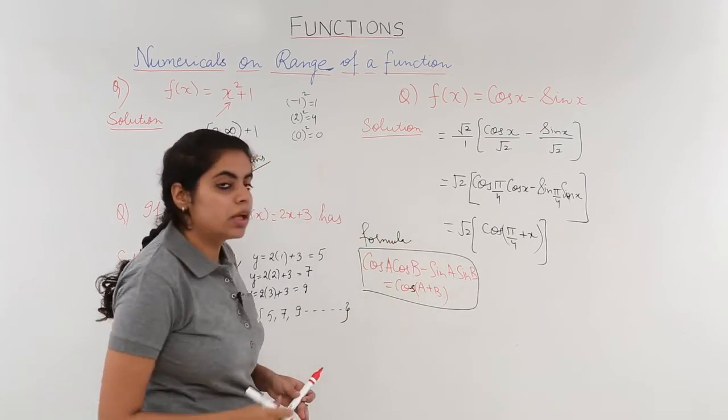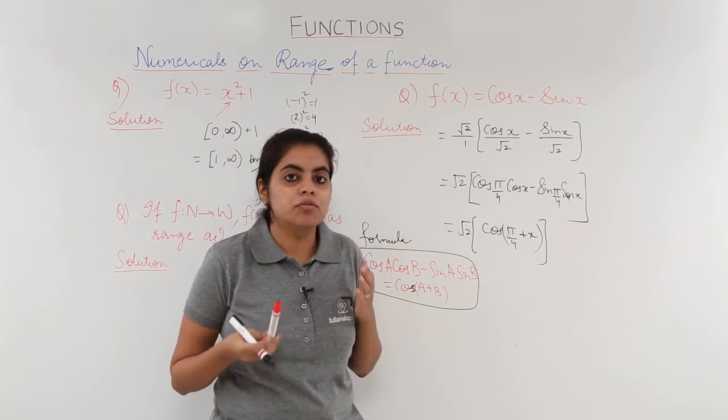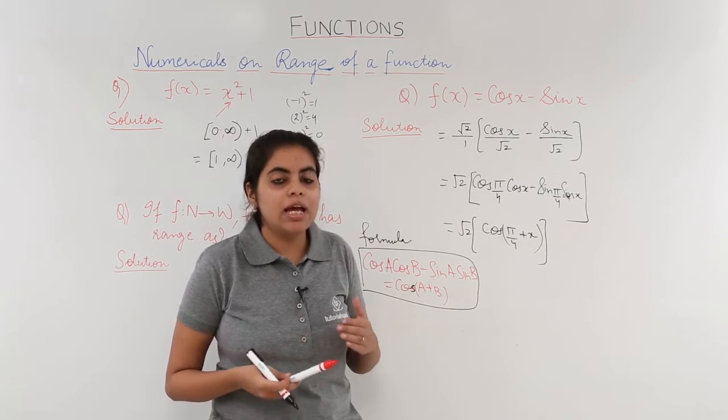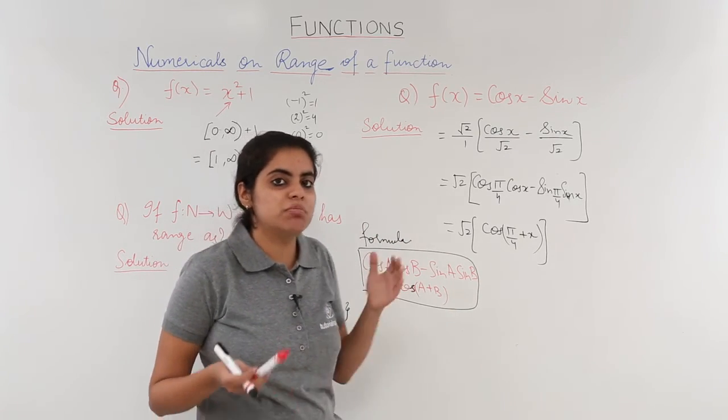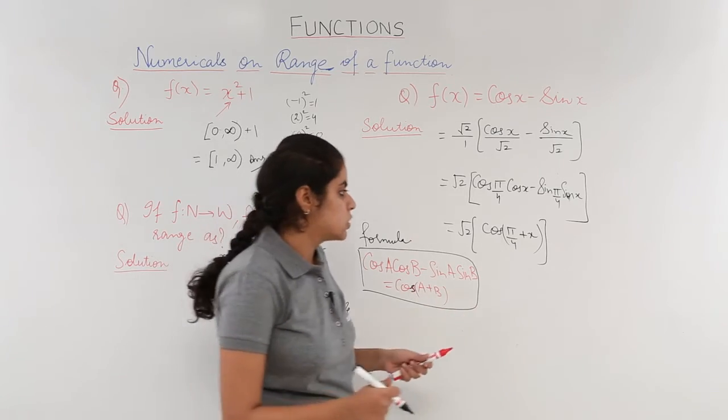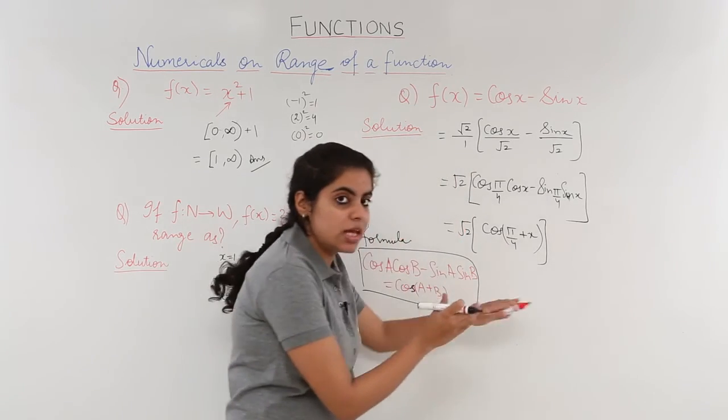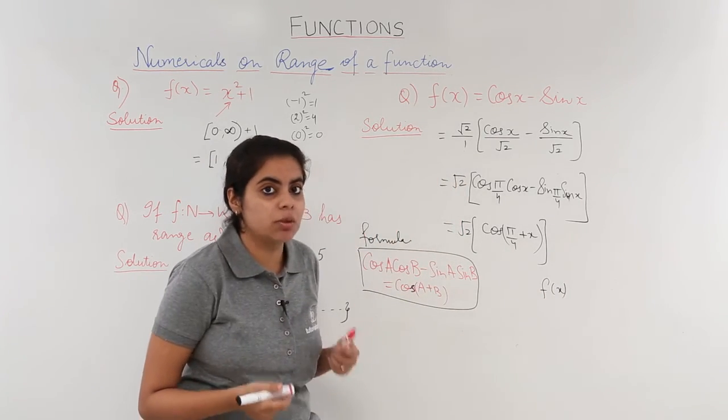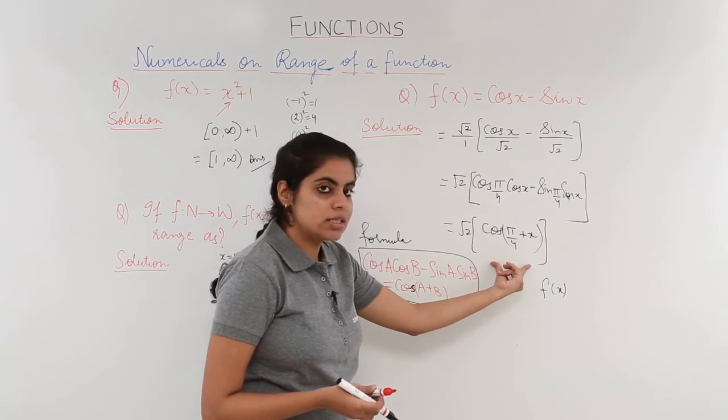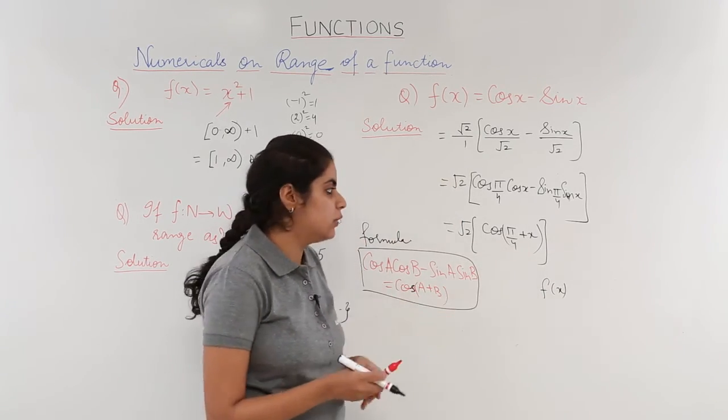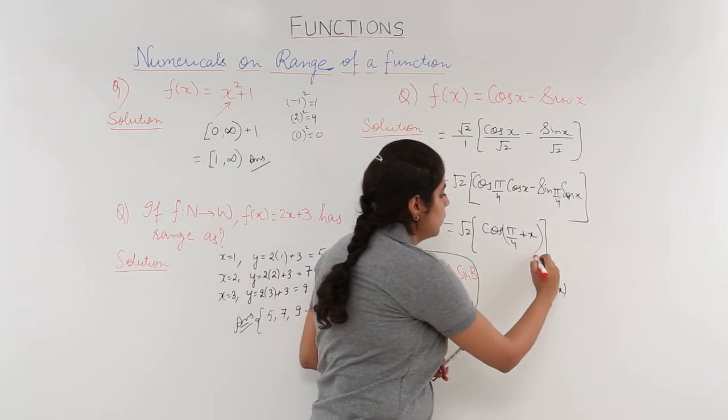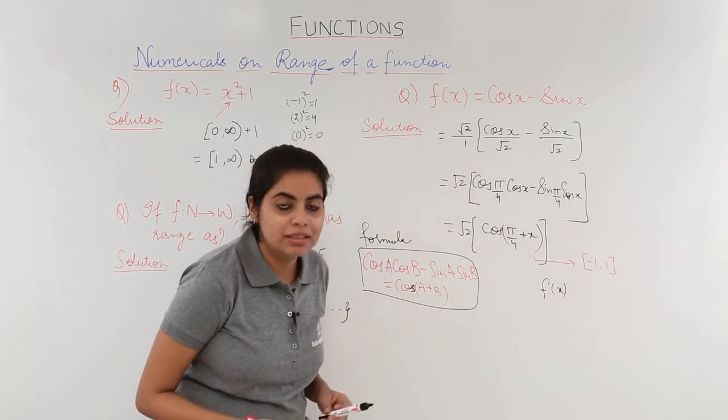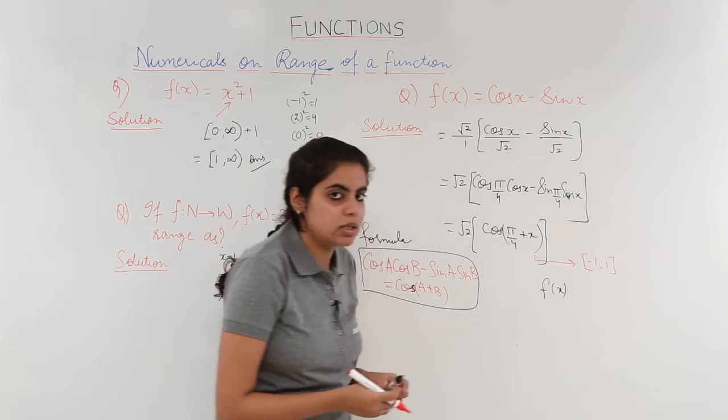Let us get back to the question now. The question was this. Now we ultimately had to find out what? We ultimately had to find out the range, and cos x and sin x always have the range as minus 1 to 1, that we know already. So that means this question, which is f(x), has been changed somewhat.